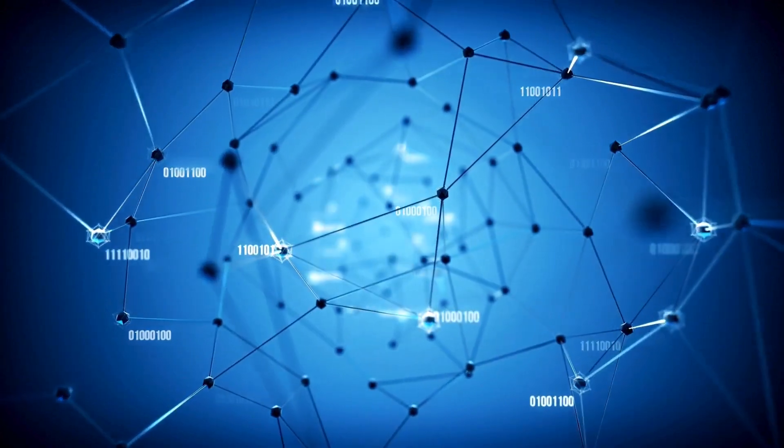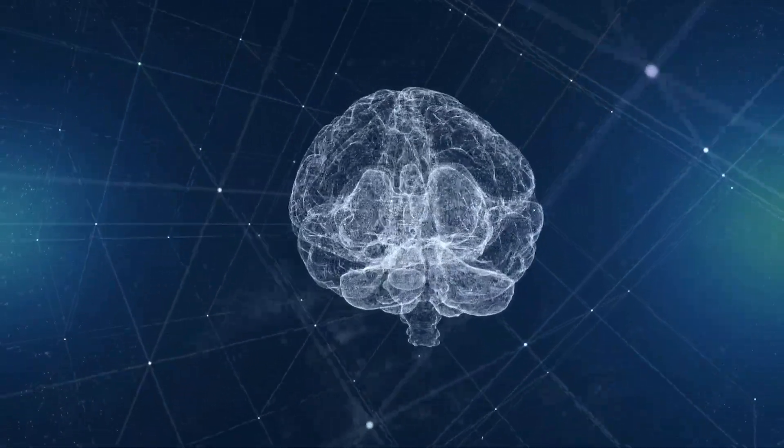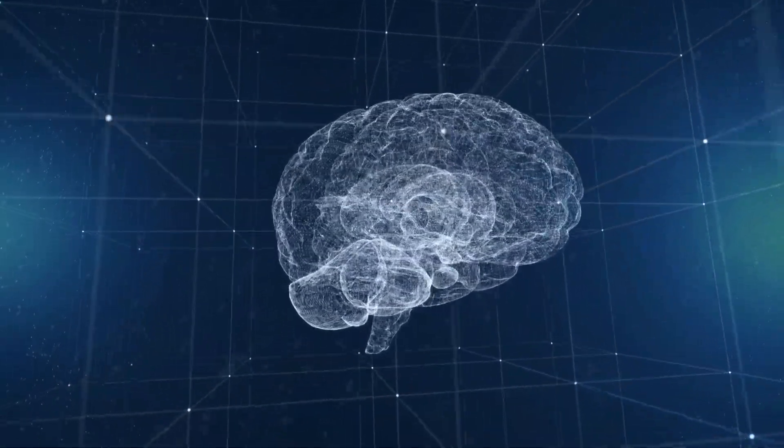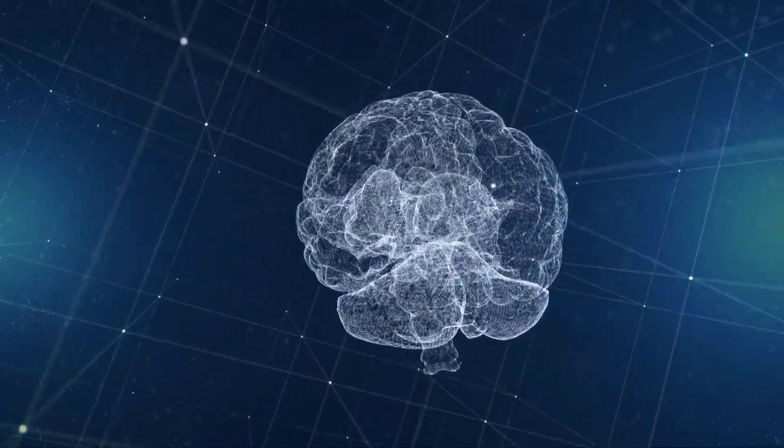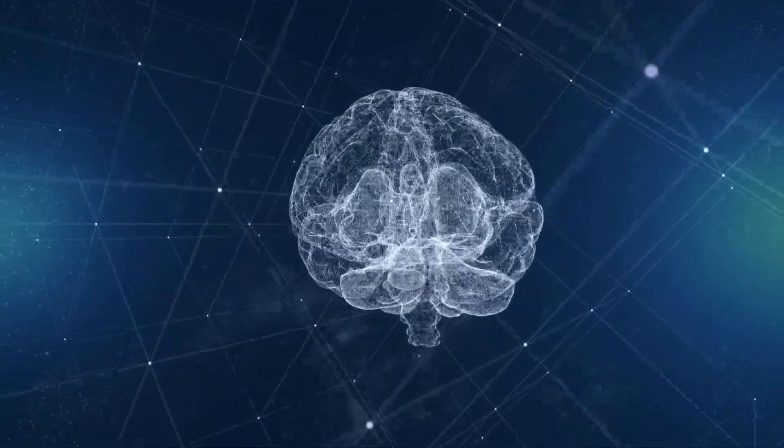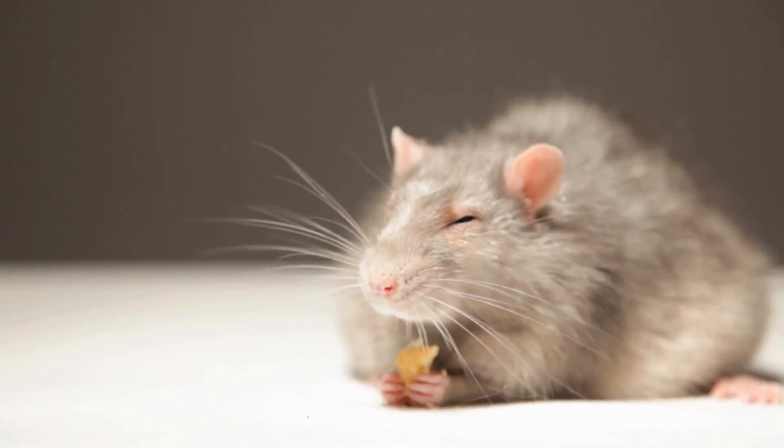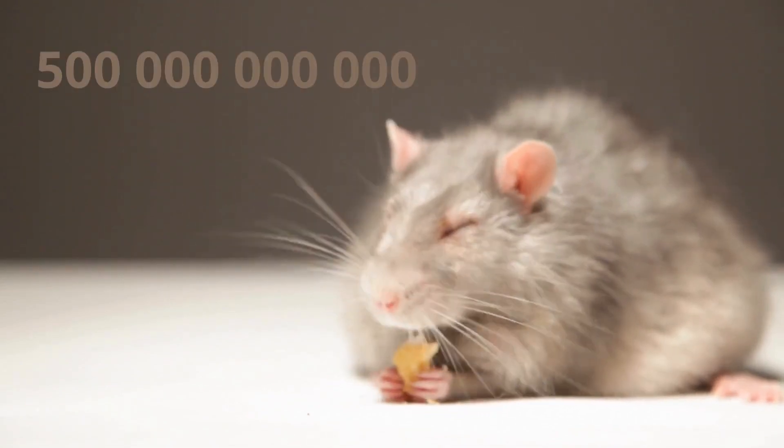When we draw a comparison between a large language model and a brain, we can think of the number of parameters as being similar to the number of synapses in the brain. It's not a perfect comparison, but it helps us grasp the complexity of today's AI models. A mouse brain is estimated to have around 500 billion synapses.